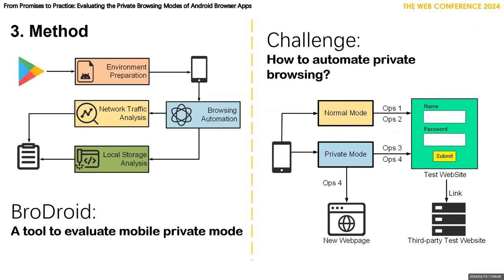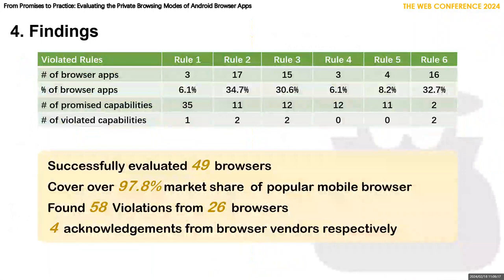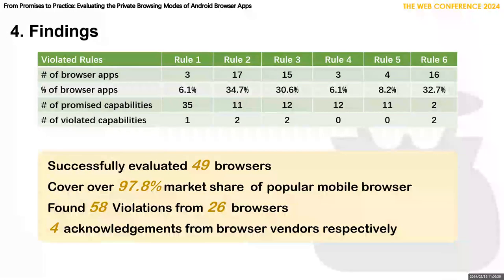The main challenge is private browsing automation. Finally, we proposed empirical solutions for an automated process to follow. Brodroid successfully evaluated 49 browsers, covering over 97.8% of the Android browser market share.